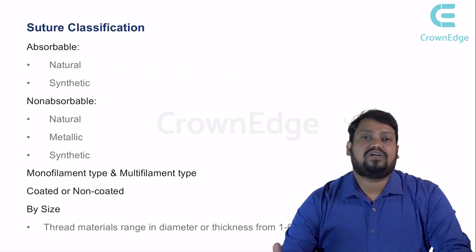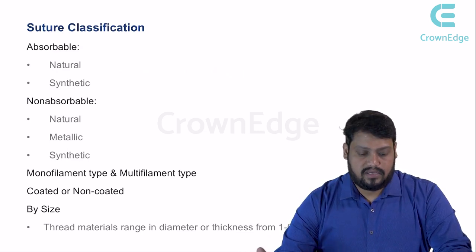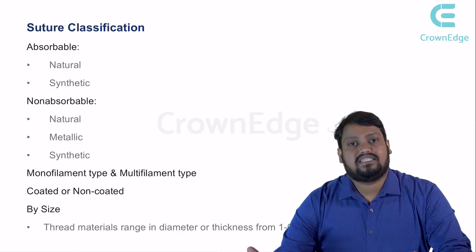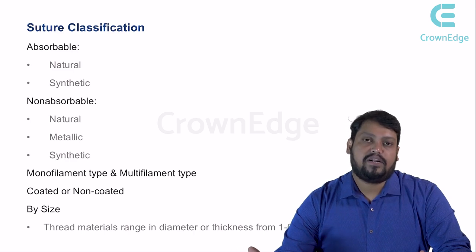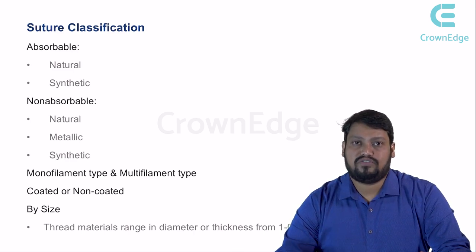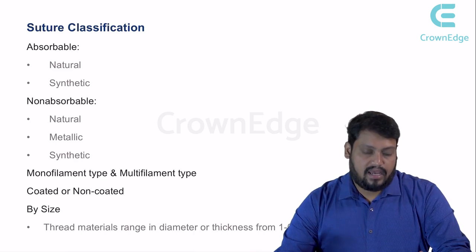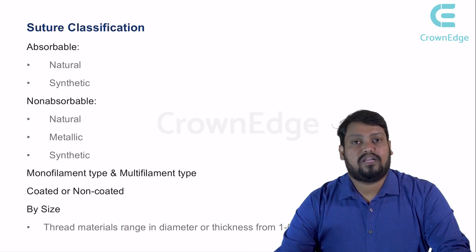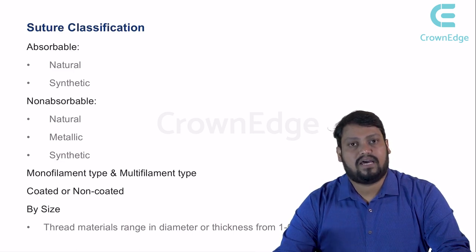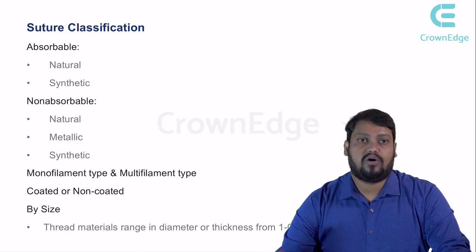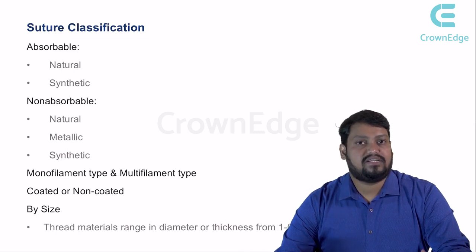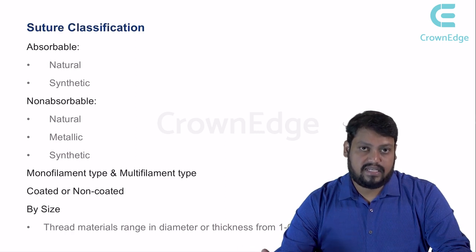Suture classification is the first thing we are going to see. Sutures are generally classified into absorbable and non-absorbable. Depending on the number of filaments, they are classified into monofilament or multifilament — that is, whether it's a single or a braided filament. Depending on the coating, there are special coating materials applied over these threads, classifying them into coated or non-coated. By size refers to the diameter or thickness of the thread.